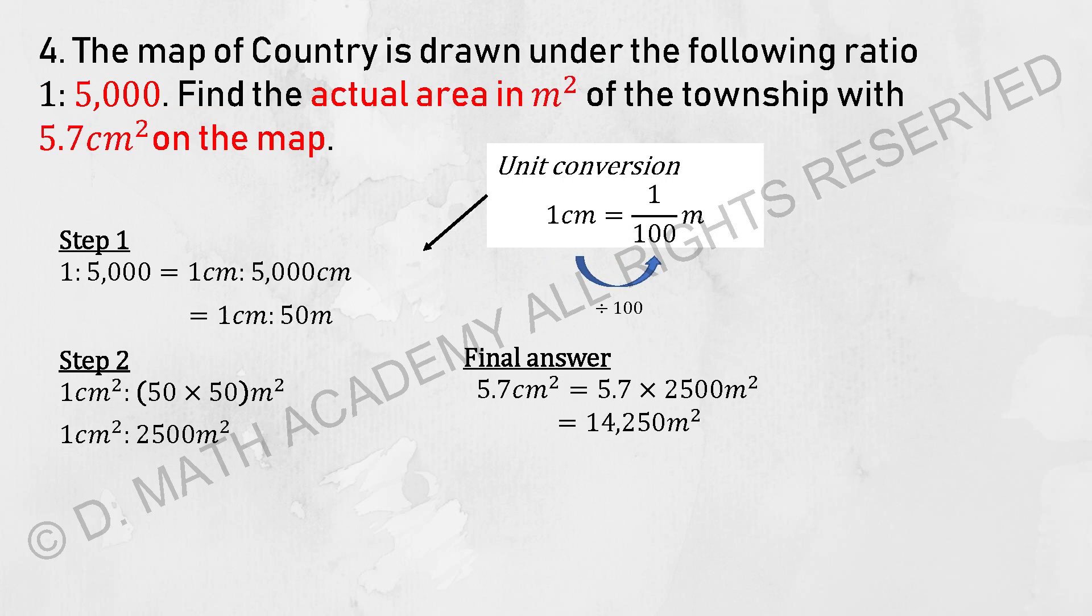We're back on question 4. The map of the country is drawn under the following ratio: 1 to 5,000. Find the actual area in meter squared if the township has 5.7 cm squared on the map.